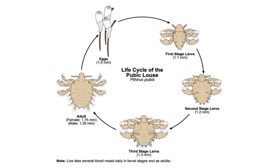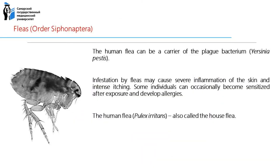The life cycle of the louse can be seen on the screen. Fleas are members of the order Siphonaptera. Fleas are ectoparasitic insects. As the chief agent transmitting the Black Death or Bubonic Plague in the Middle Ages, they were an essential link in the chain of events that resulted in the death of a quarter of the population of Europe. Infestation by fleas may cause severe inflammation of the skin and intense itching.